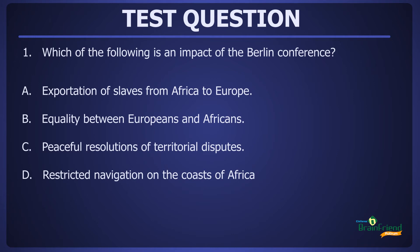Let's take a few questions to test our knowledge. Question 1: Which of the following is an impact of the Berlin Conference? Option A: Exportation of slaves from Africa to Europe. Option B: Equality between Europeans and Africans. Option C: Peaceful resolutions of territorial disputes. Or Option D: Restricted navigation on the coasts of Africa. The correct answer is Option C — peaceful resolutions of territorial disputes.